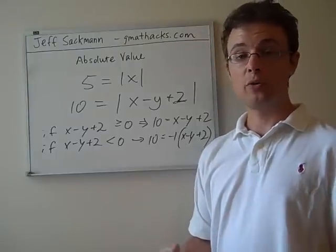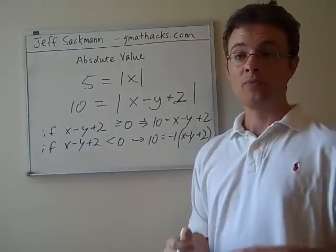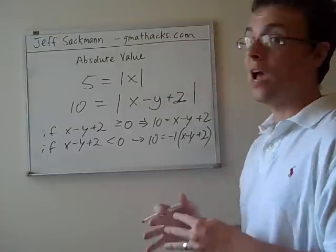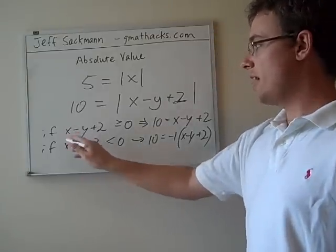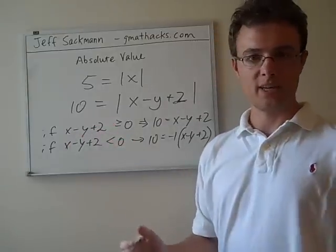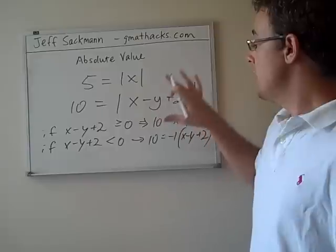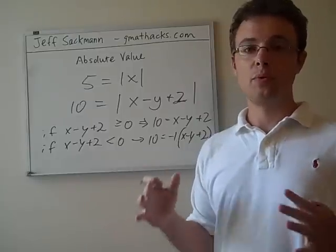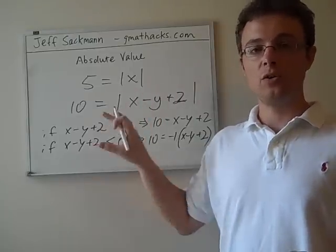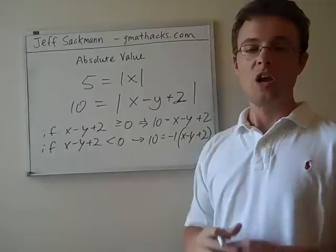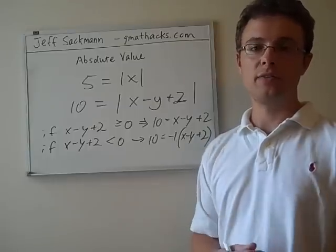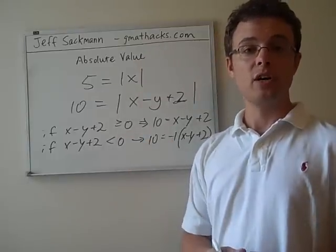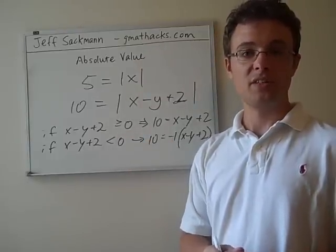So as you can see, this gets tricky, but the underlying concepts are pretty simple. Just taking the absolute value, turning it into two possibilities. For more practice, for more background on this stuff, check out my website, gmat hacks dot com. Check out my book, Total GMAT Math. See you next time.